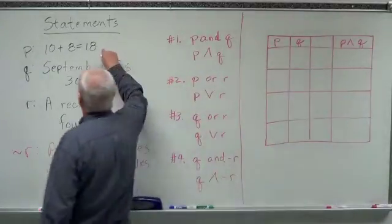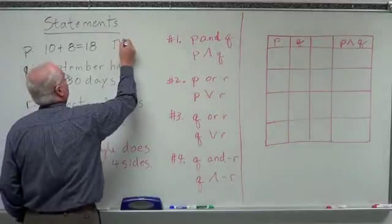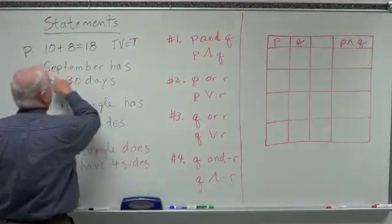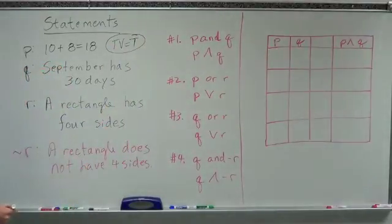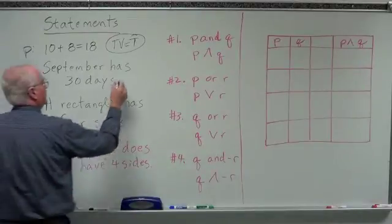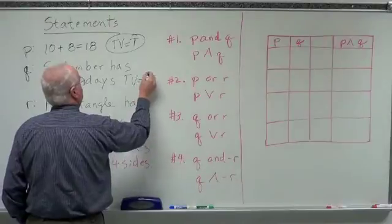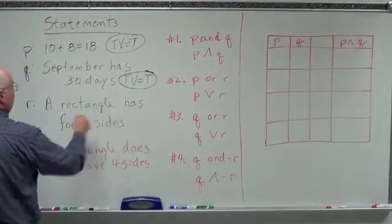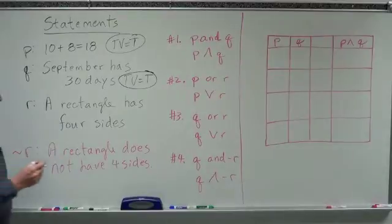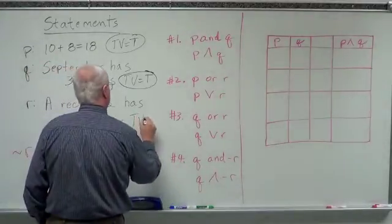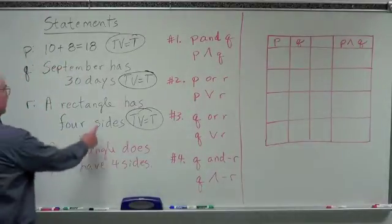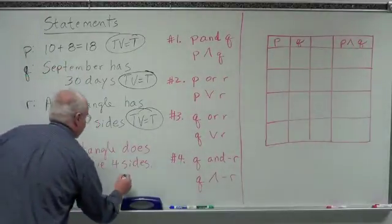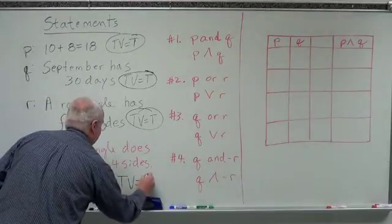Tell me the truth value of P: 10 plus 8 equals 18 — that's true. Truth value of Q: September has 30 days — that's true. R: a rectangle has four sides — truth value is true. So not R — a rectangle does not have four sides — the truth value of that has to be false.